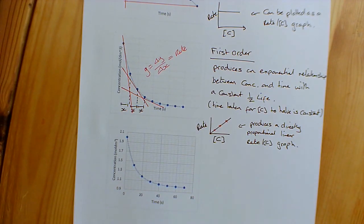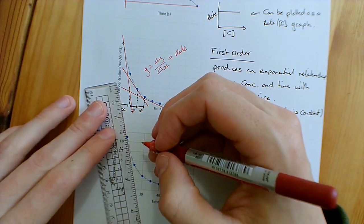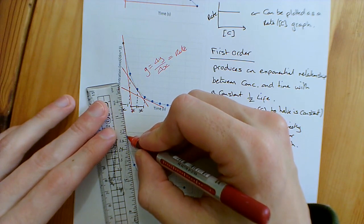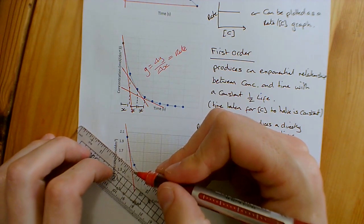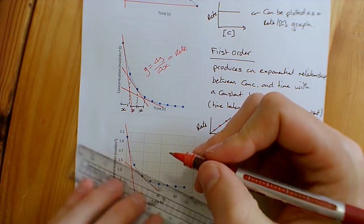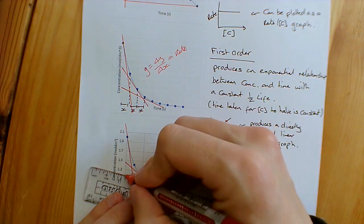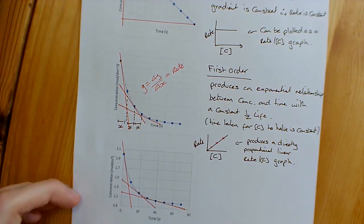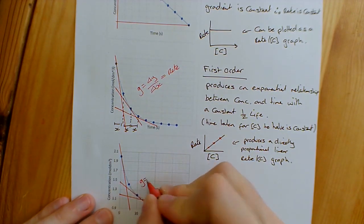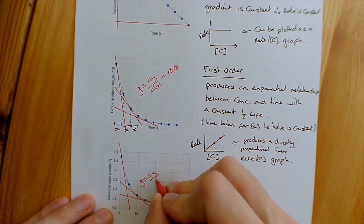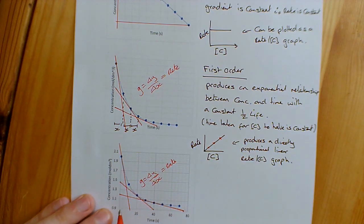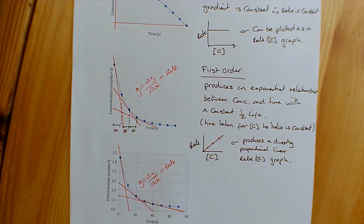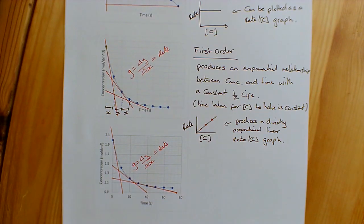We do exactly the same as before — take three tangents: one right at the beginning for the initial rate, one nearer the middle, and one nearer the end. Calculate the gradient of each tangent to get the rate, and reading off the y-axis gives you the concentration at those points. You now have three concentration-rate pairs to plot on a rate-concentration graph.